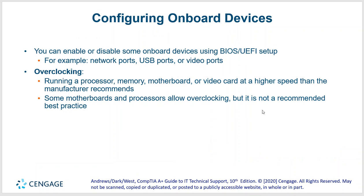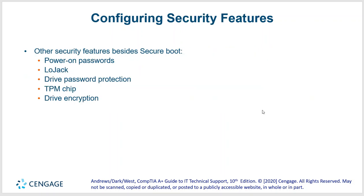You can disable things through BIOS: network ports, USB ports, video ports. You can overclock the processor to make things go faster — though overclocking will make everything hotter. Other security features besides secure boot include power-on passwords, LoJack — which is like Find My iPhone for laptops — drive password protection, your TPM chip, which is your Trusted Platform Module chip, and any drive encryption you may want.